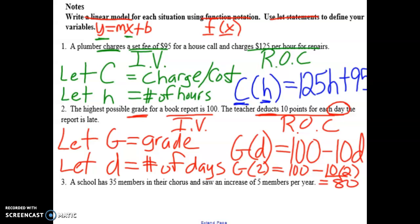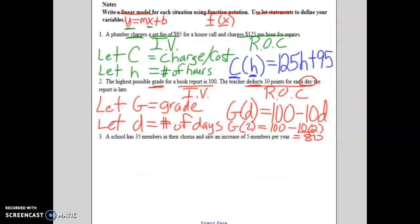If it's 10 points for every day and I'm two days late, that's 20 points off of 100. Now my grade is an 80. Hopefully this is making common sense and we're just kind of putting some mathematics to that common sense. Let's look at the next one.